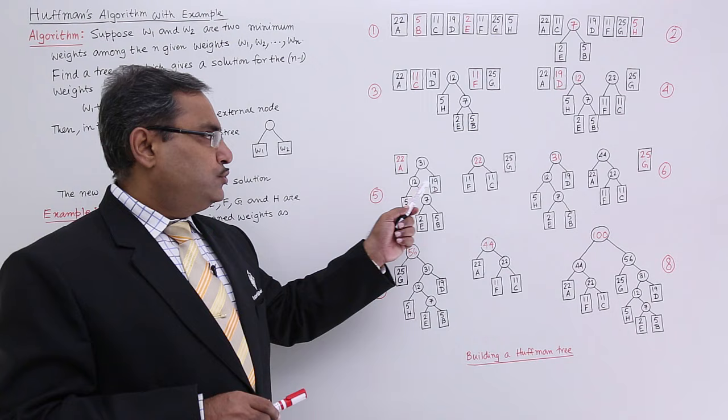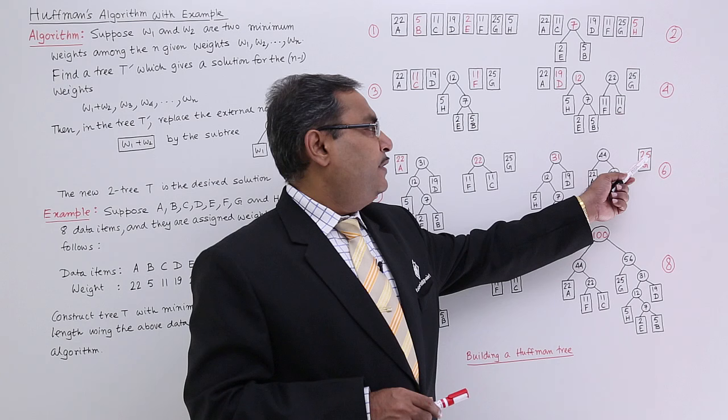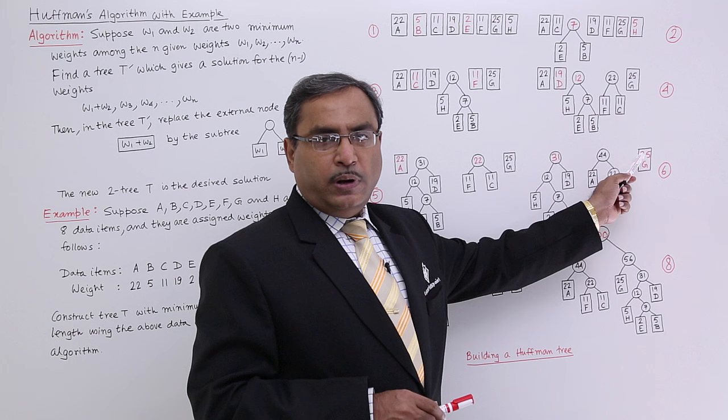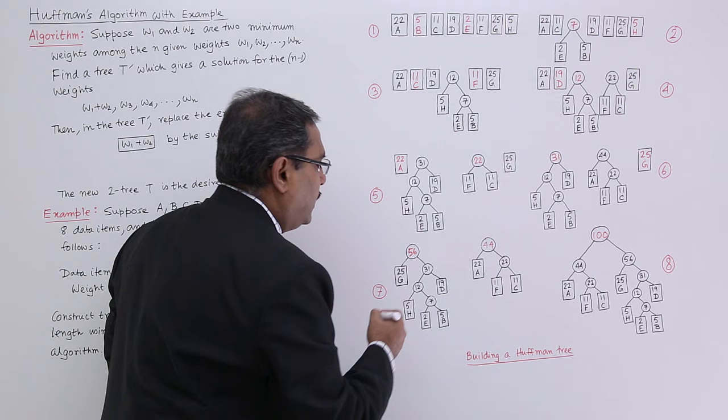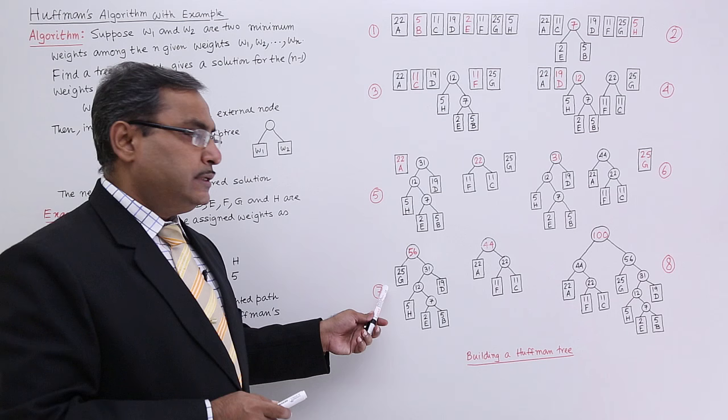Then 31 and 25 will be minimum out of this three. So 31 plus 25, it will become 56. So 56 will be coming down here. And we are having this others as subtrees.